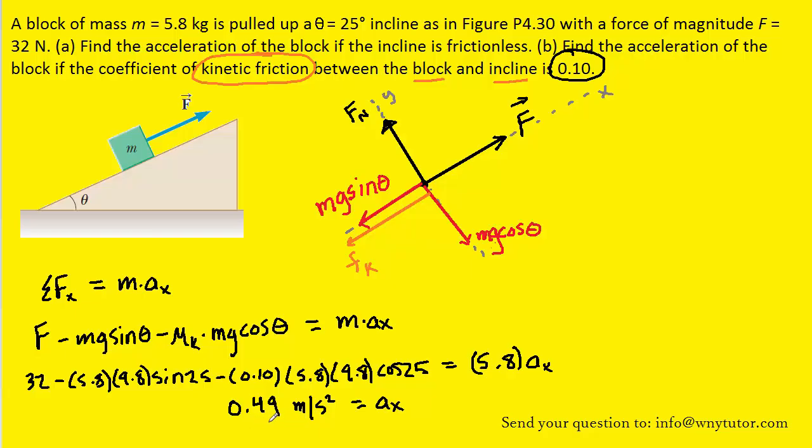Notice this acceleration is smaller than the one found in part A, which certainly makes sense, because there is friction acting between the block and the ramp, and that's kind of slowing down the acceleration of the object.